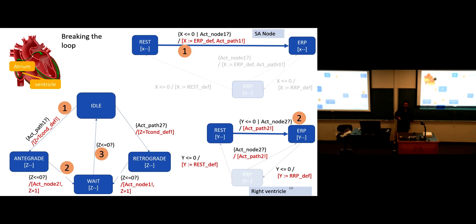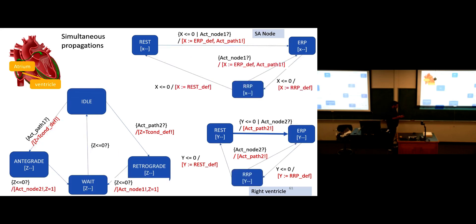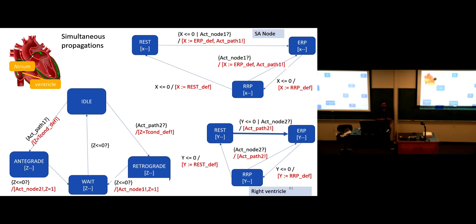One final piece to introduce in this basic heart model: the current picture can do both anti-grade and retrograde depolarization, and by playing with the rest period, ERP, and timers, we can tune it to a specific condition like bradycardia. However, there is one more phenomenon which occurs in the heart that we haven't yet talked about — simultaneous propagations from opposite directions.